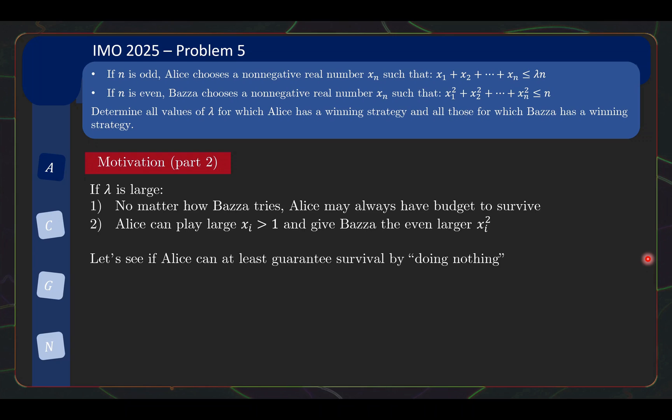So let's see whether Alice can even guarantee survival by doing nothing. So by doing nothing, I mean submit zero. So one thing we want to check is on turn 2k plus 1, can we guarantee that x2 plus dot dot plus x2k would be less than or equal to Alice's total budget. So this will show that if Alice just keeps doing nothing, submitting zero, no matter how Bazaar plays, whatever Bazaar throws at Alice is still within Alice's total budget. So Alice can continue to play zero.